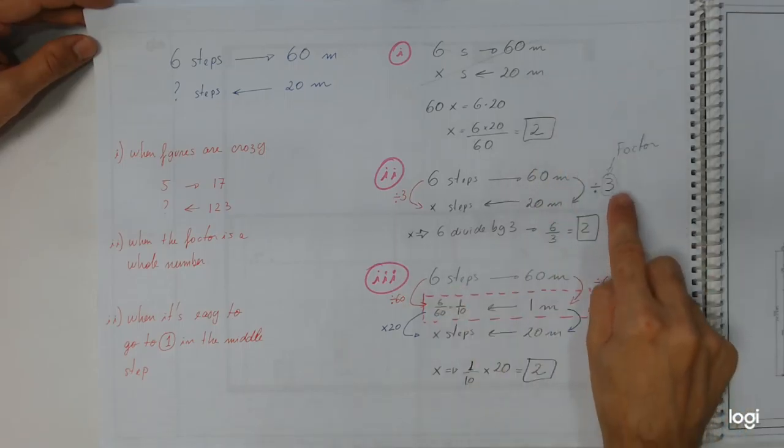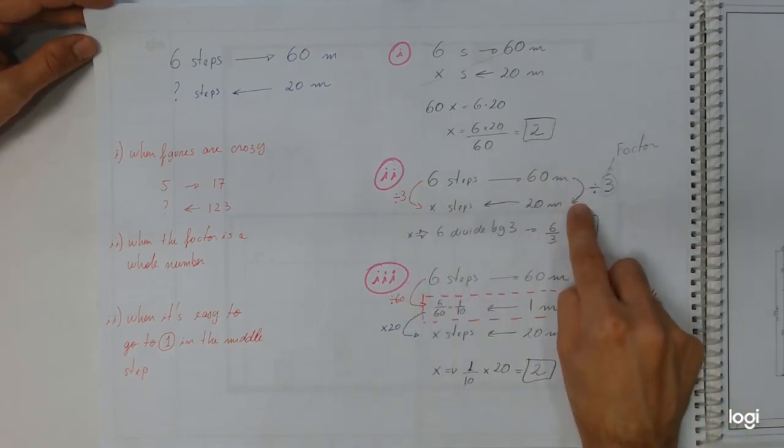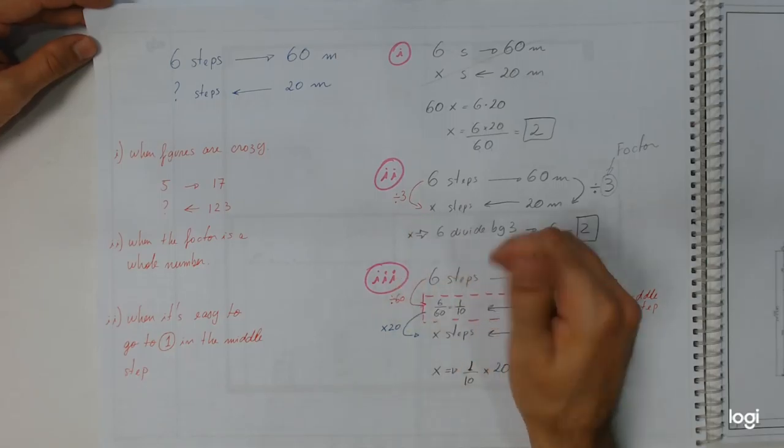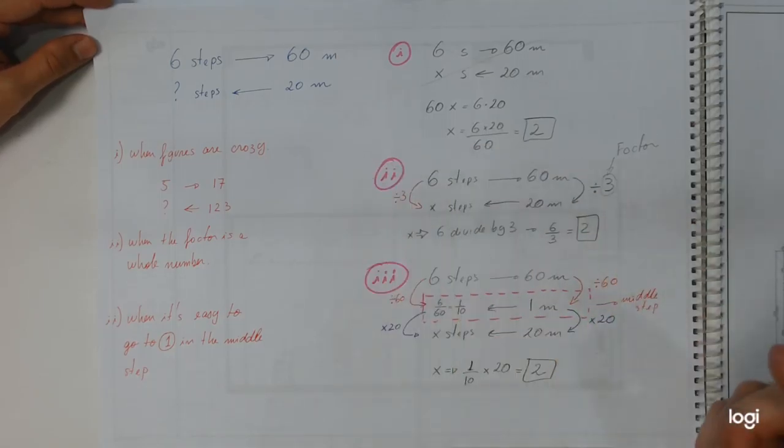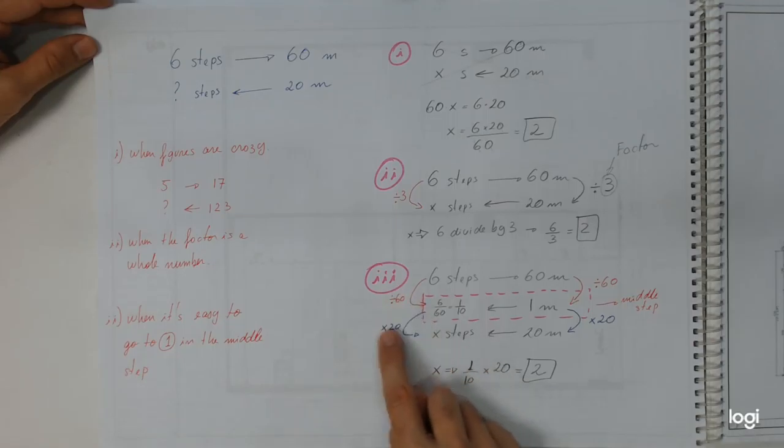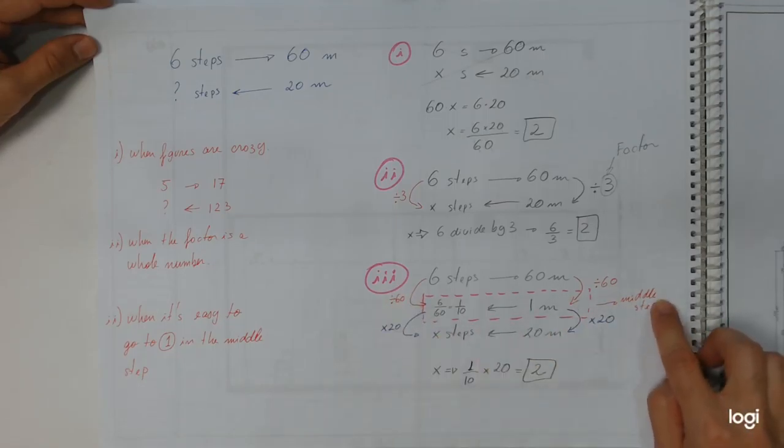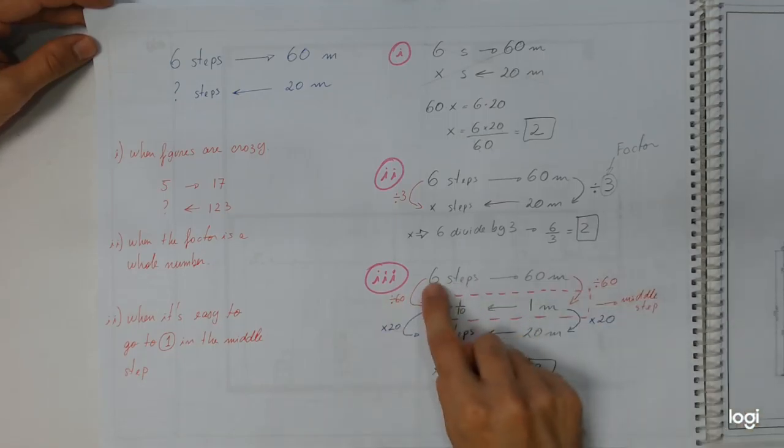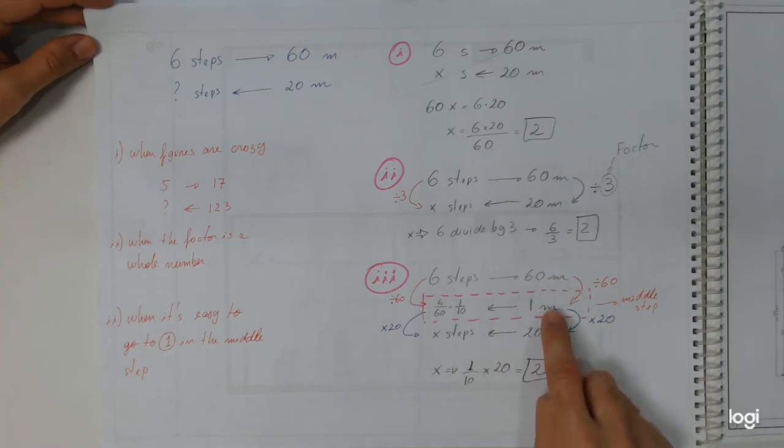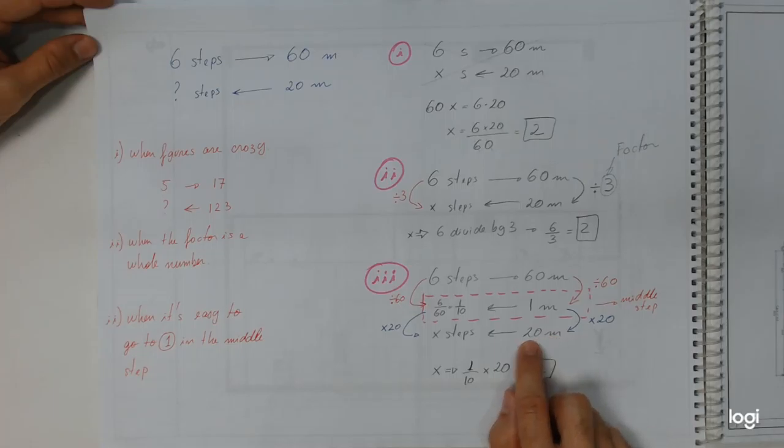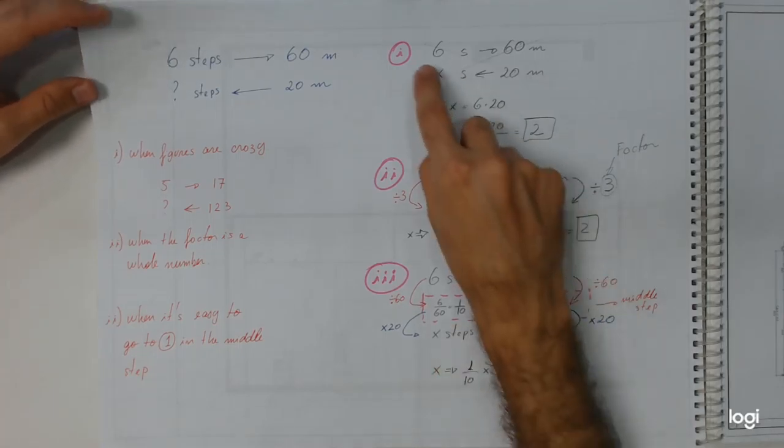We can make cross multiplication first step, or we can make just the ratio thing - remember, divide by three, divide by three - this is the one we use the most. Or we can make the third type. The third type would be the middle step: first step, second step, make it with one, and the third step we just end the problem.